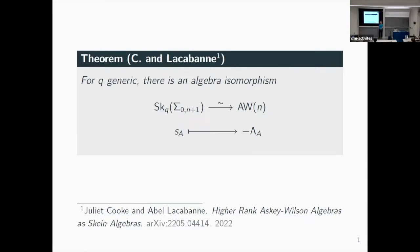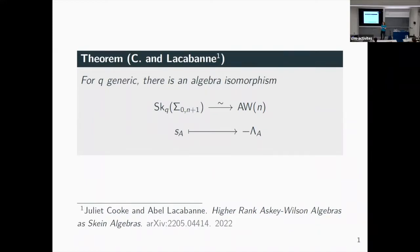The isomorphism sends the generators of the skein algebra to the generators of the Askey-Wilson algebra with an annoying minus sign, which basically comes down to convention. One way to think of this is: the Askey-Wilson algebra is defined essentially through orthogonal polynomials — it's algebraic — while the skein algebra is defined graphically in terms of skeins, links, surfaces, and diagrammatic relations. So this theorem gives a topological interpretation to the higher rank Askey-Wilson algebra.